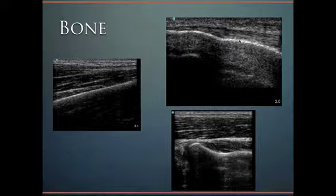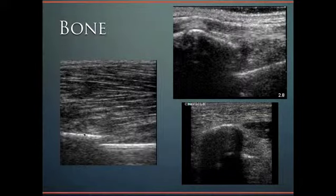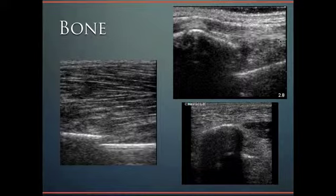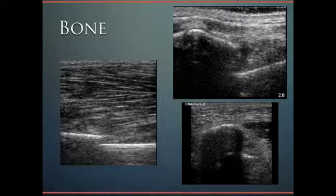We can see the bone and make it out along its long axis. When the bone has a fracture, we can see a step-off: one bony fragment, a step-off, and then another bony fragment. In this particular patient we can also make out anisotropy on the tendon, appearing falsely hypoechoic. With the clavicle fracture, one part of the clavicle is here, there's a step-off, and then another part of the clavicle is seen down there.